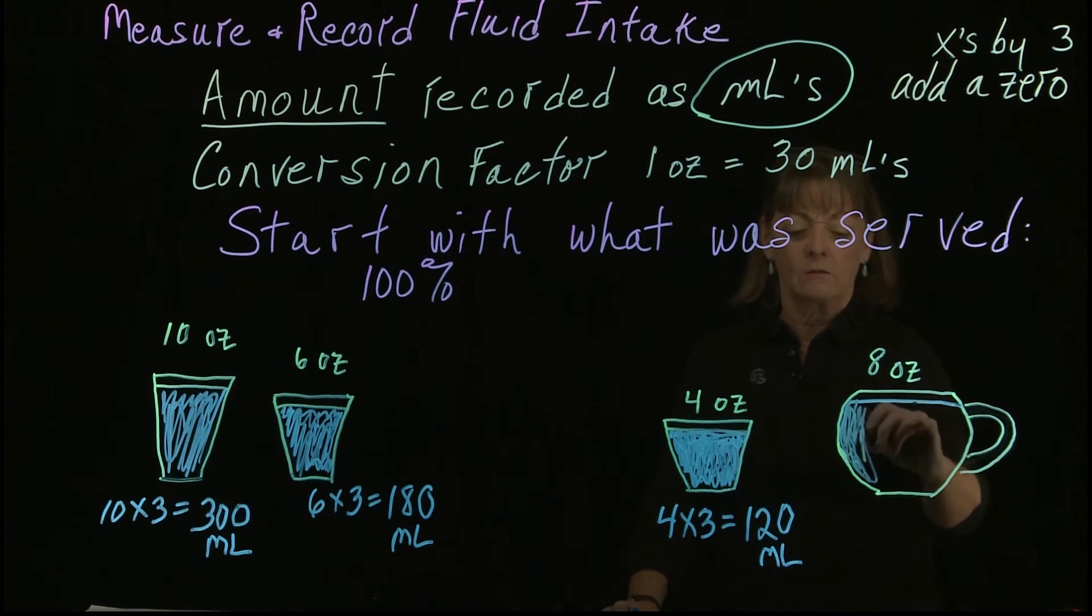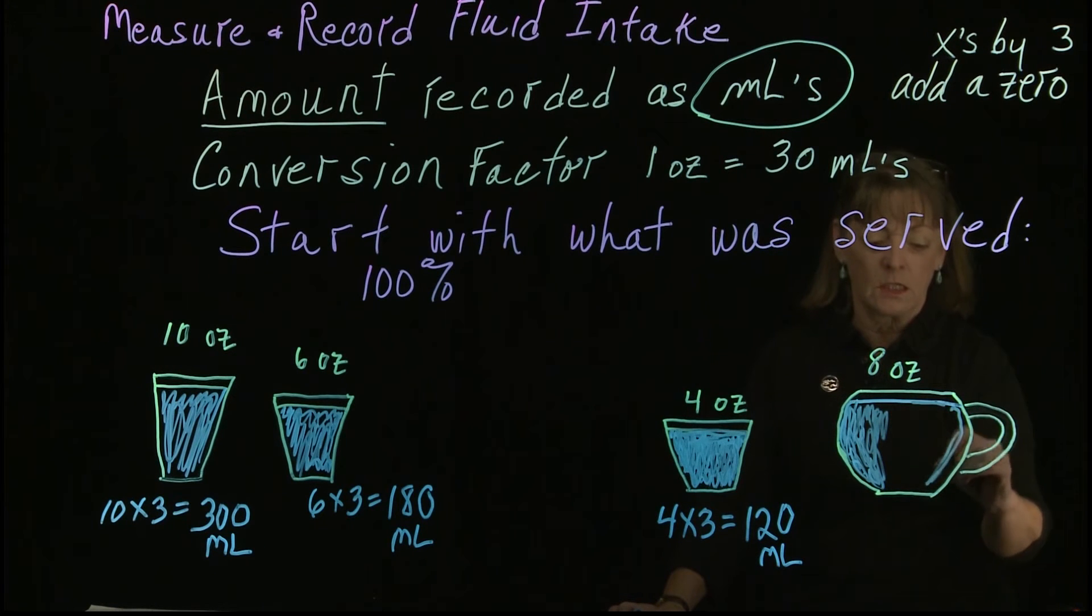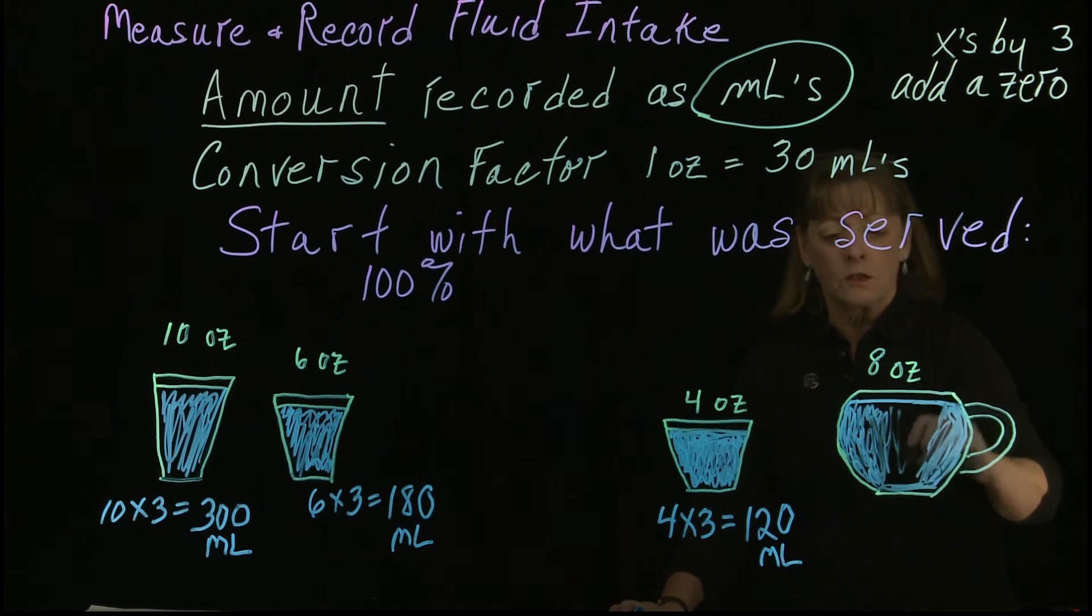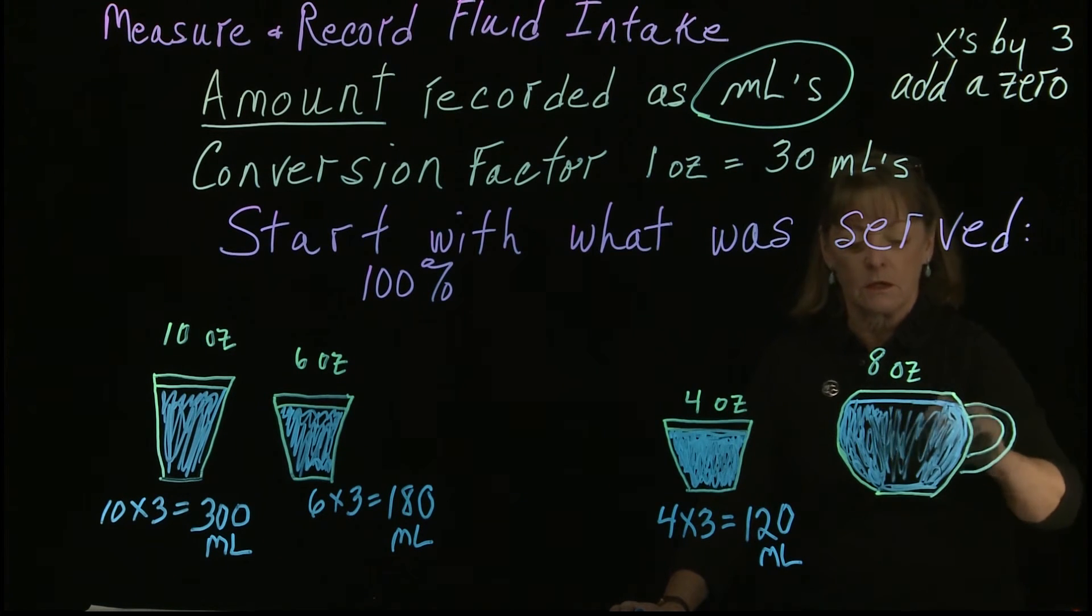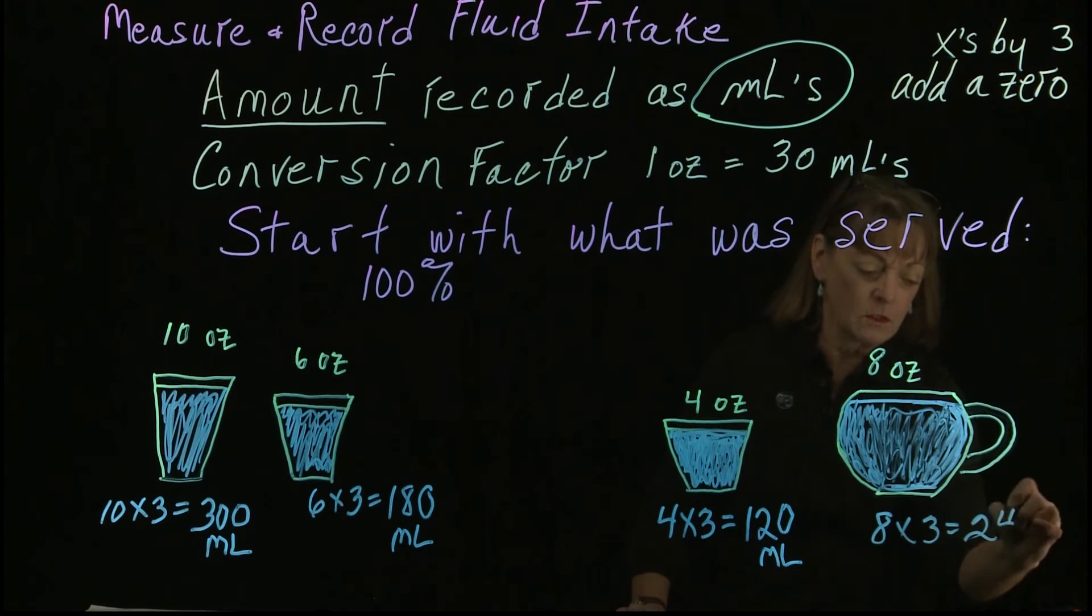So we have this coffee mug or tea or hot chocolate or apple cider. This time of year, apple cider is pretty good since it's getting to be winter. So 8 ounces times 3, this is all filled up. 8 times 3 equals 24, add a 0, and we get 240 mL.